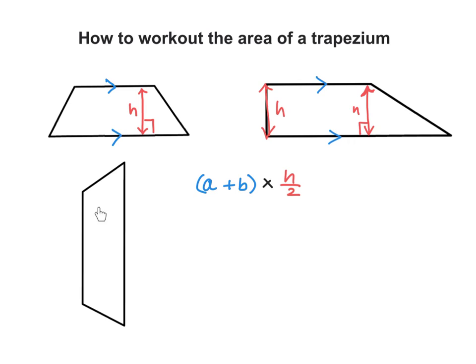Now let's illustrate it on this one here. The parallel sides are these two. The first step is we sum these two parallel sides, we add them up, and then multiply by half of the height. The height, remember, is the perpendicular distance from one parallel side to the other — at 90 degrees. So it's this height there. We add the parallel sides and then multiply by half of the height.